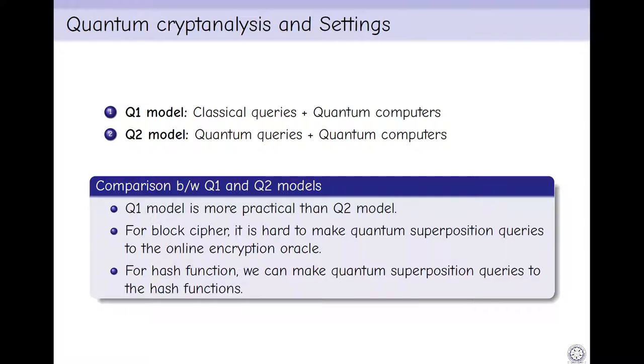Next, we discuss quantum cryptanalysis and quantum settings. There are two kinds of quantum attack models: Q1 model and Q2 model. In Q1 model, adversary is allowed to make classical queries plus has the power of quantum computer. In Q2 model, adversary is allowed to make quantum queries plus has the power of quantum computers. In general, Q1 model is more practical than Q2 model because for block cipher it is hard to make quantum superposition queries to the online encryption oracle, while for hash function we can make quantum superposition queries to the hash functions offline.